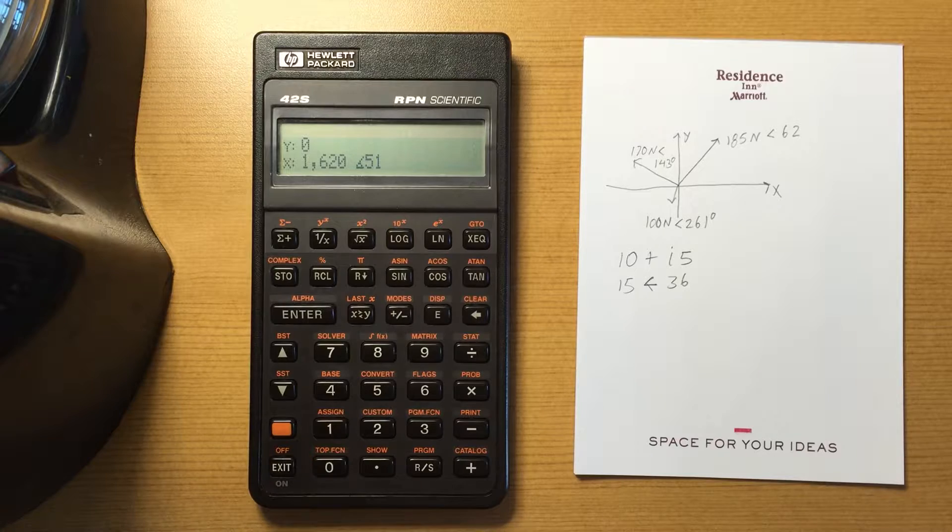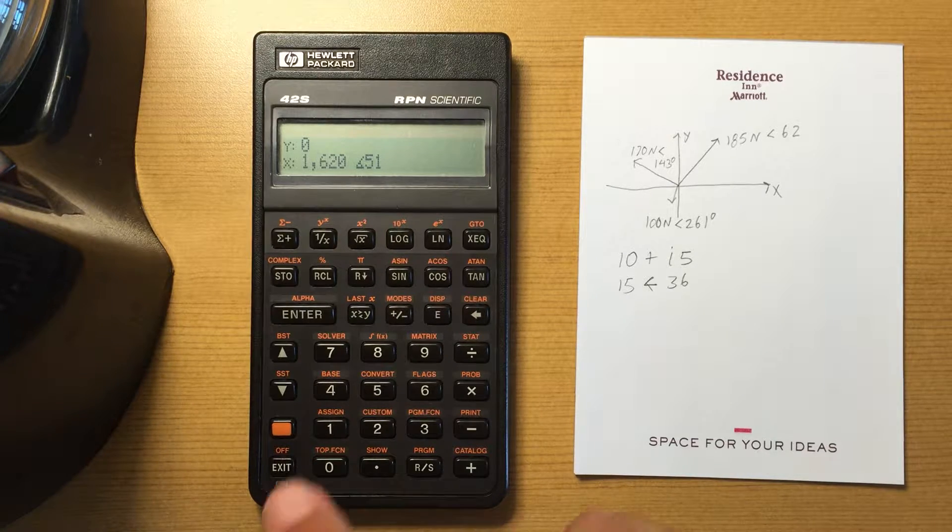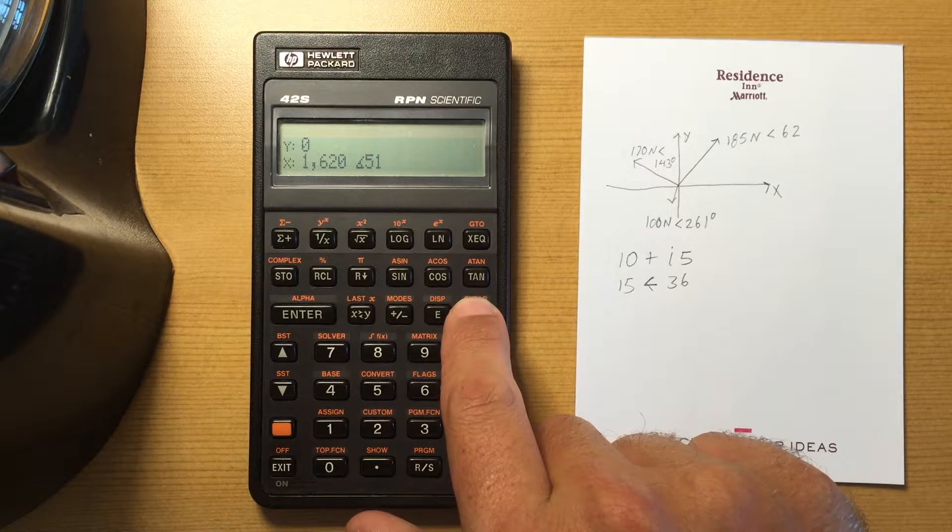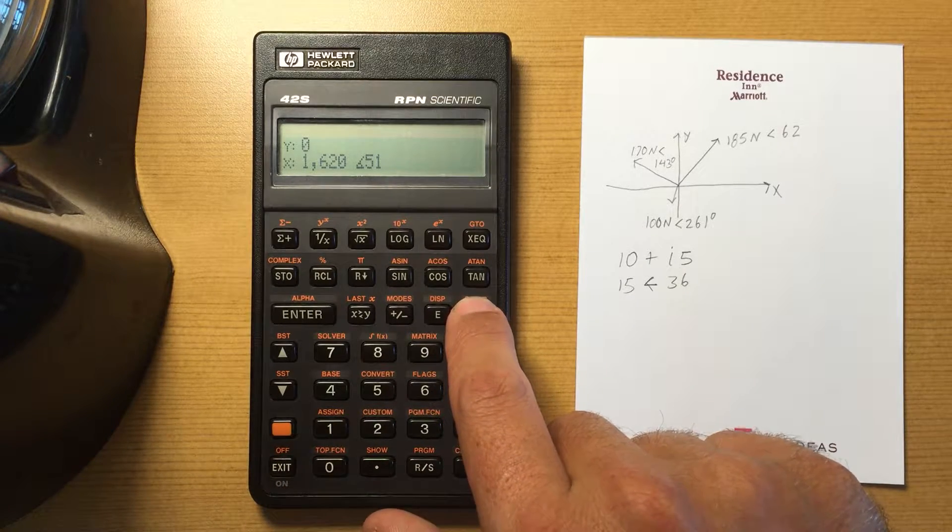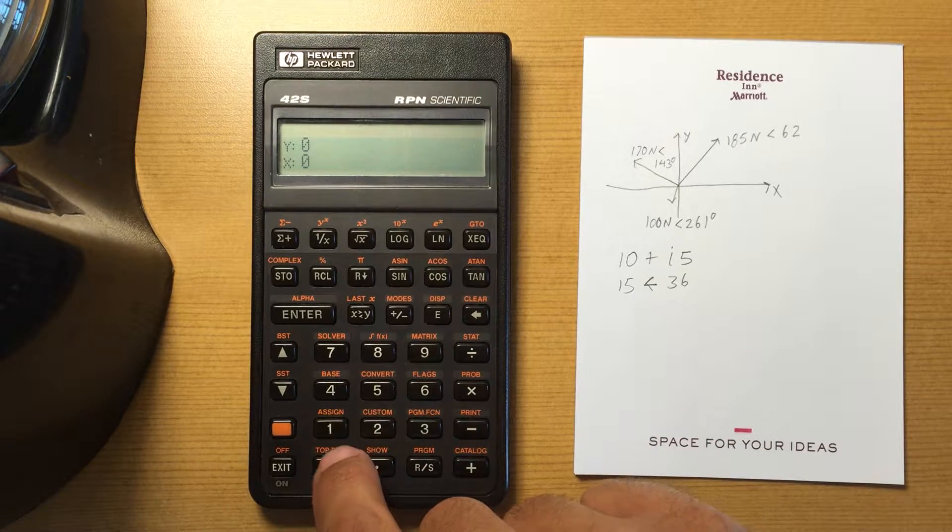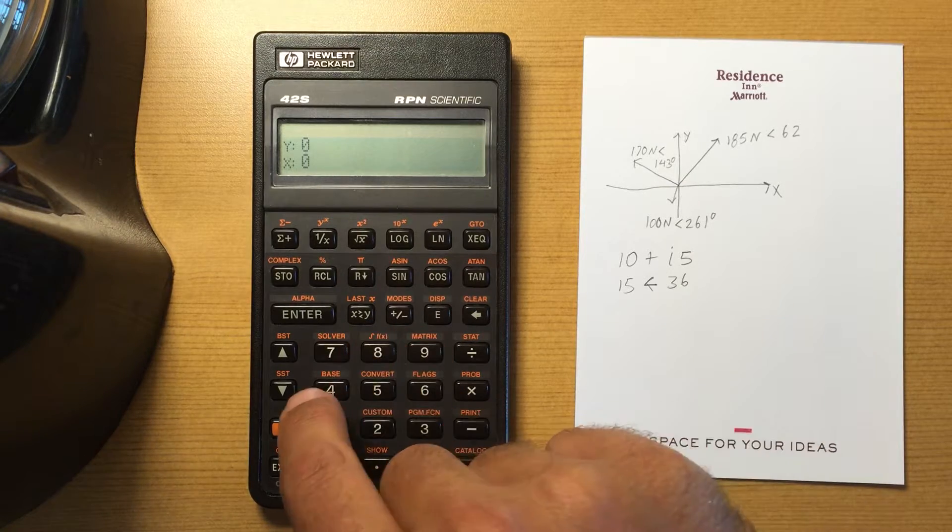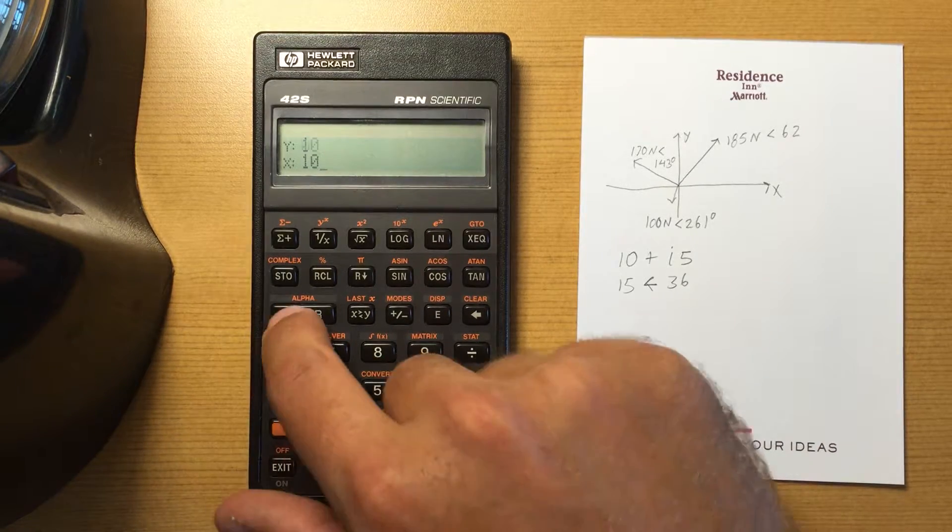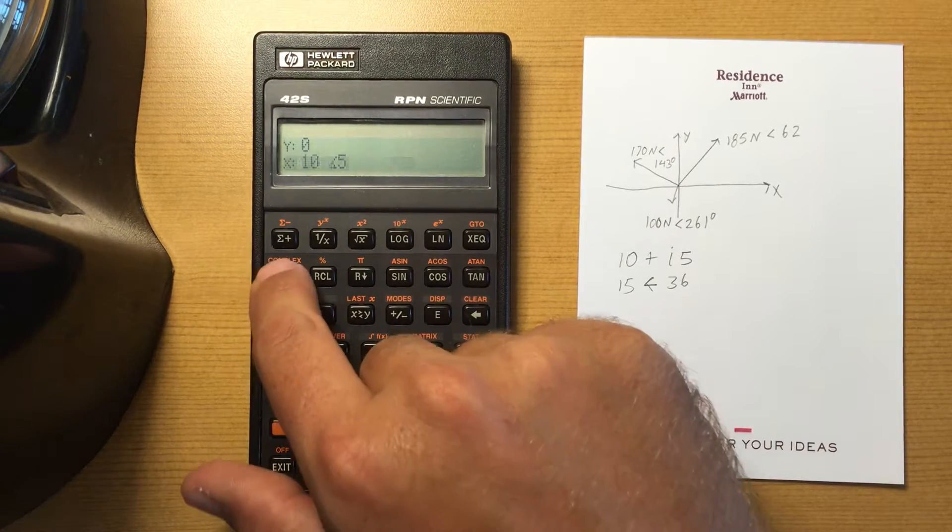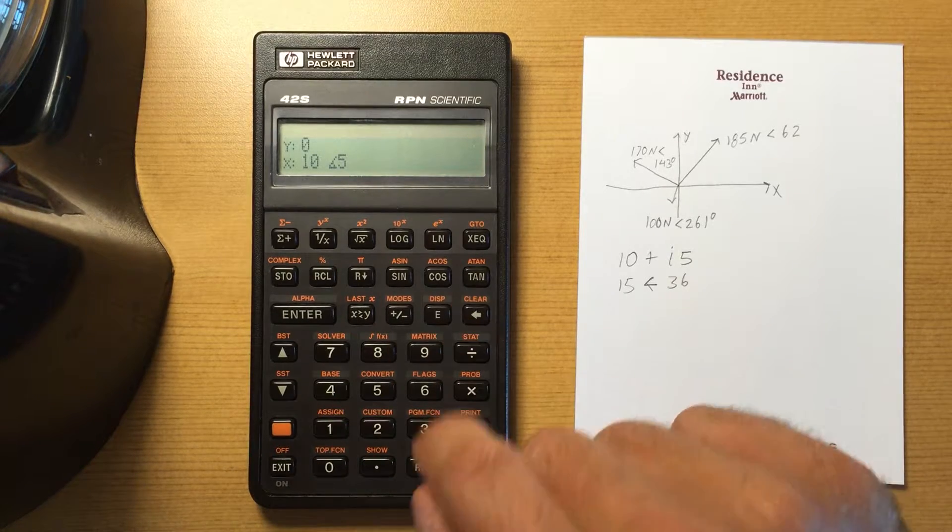To store a complex number, by default at least when I got this calculator, I could not store in the register. So if I had a complex number and I tried to store it in say 01, says invalid type.